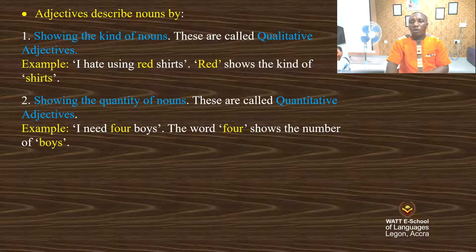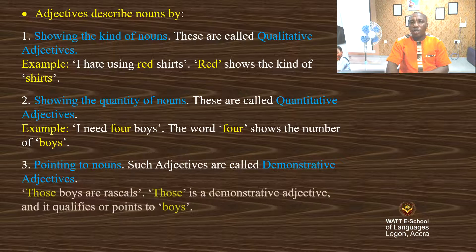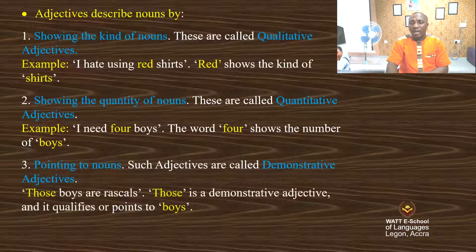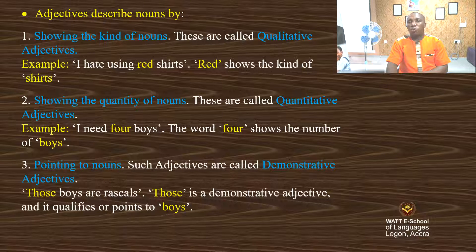Third, adjectives describe nouns by pointing to nouns. These are called demonstrative adjectives. For example: 'Those boys are rascals.' The word 'those' is a demonstrative adjective, and it qualifies the noun — it points to 'boys'.